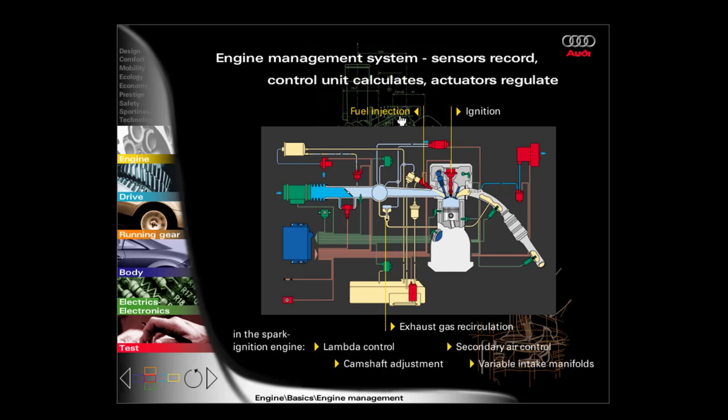In spark ignition engines, the engine management system also monitors and regulates the lambda control, secondary air control and, depending on the vehicle's equipment, also camshaft adjustment and the variable intake manifold control systems. In order to obtain further information regarding those components, please click onto these with the mouse.